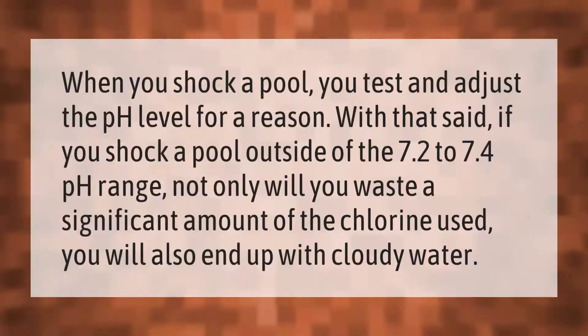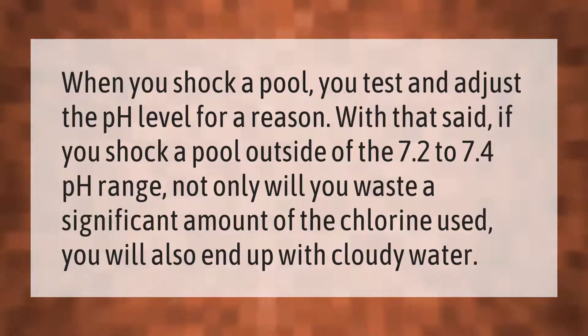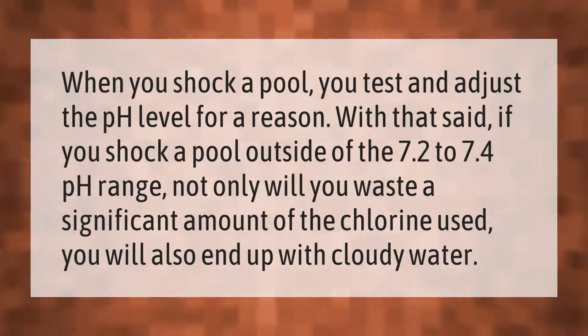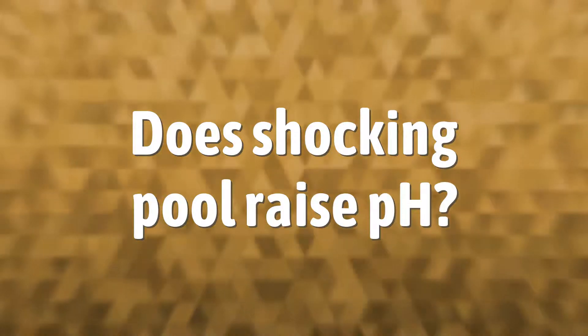When you shock a pool, you test and adjust the pH level for a reason. If you shock a pool outside of the 7.2 to 7.4 range, not only will you waste a significant amount of the chlorine used, you will also end up with cloudy water.